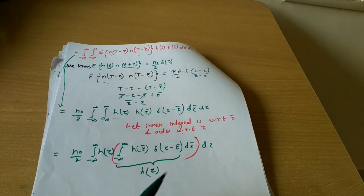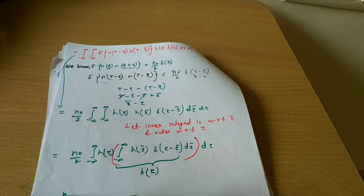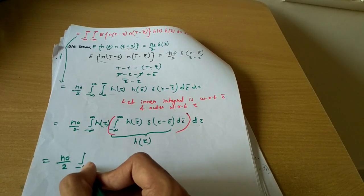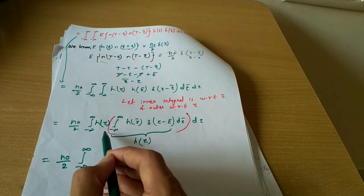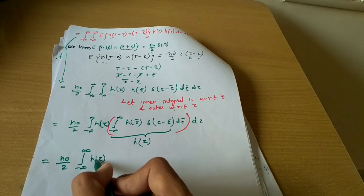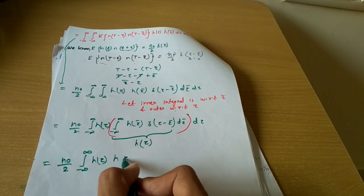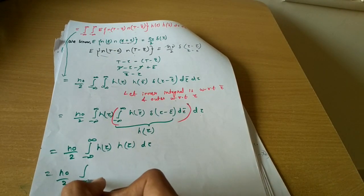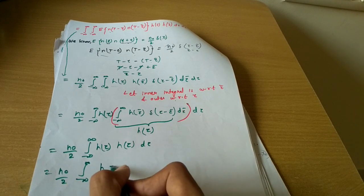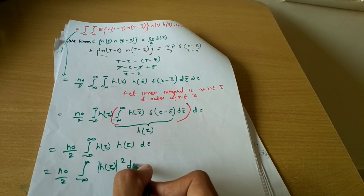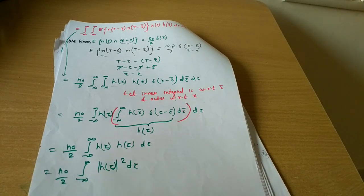After applying the delta function property, the inner integral simplifies to h(τ). So we are left with N₀/2 times the integral from minus infinity to infinity of h(τ) · h(τ) dτ, which equals N₀/2 times the integral of |h(τ)|² dτ. This represents the noise power contribution.